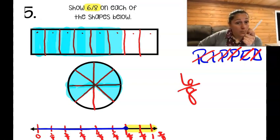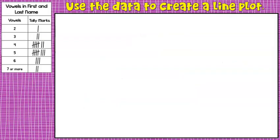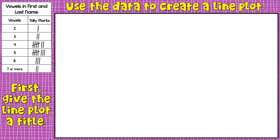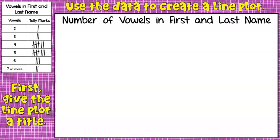Now we're going into drawing a line plot graph. We'll use the information from the tally chart to create one. First, we give the line plot a title — every graph needs a title, just like with the picture graph and the bar graph. Our title is going to be the same as the tally chart: 'Number of Vowels in First and Last Names.'